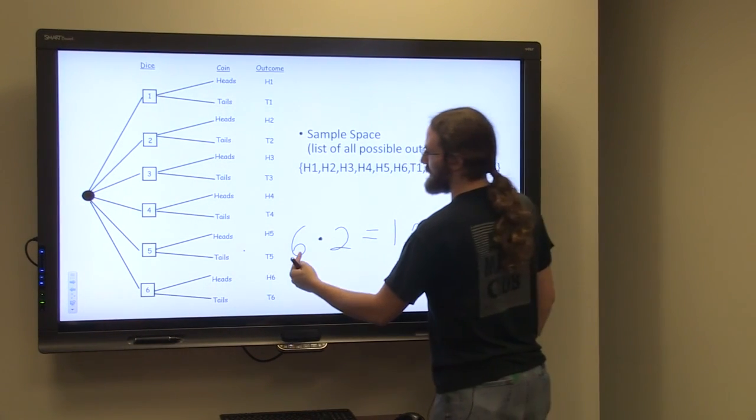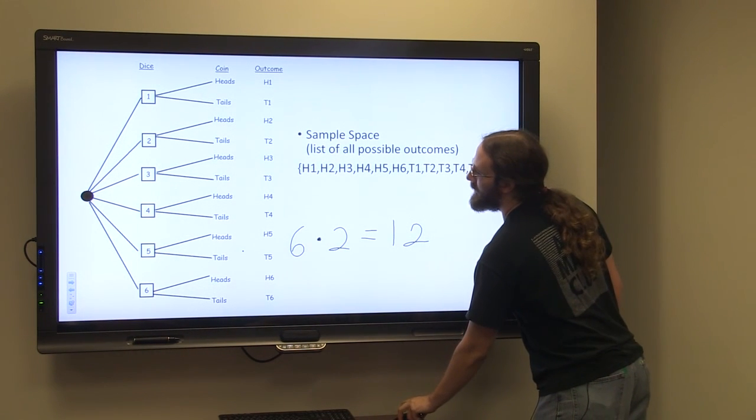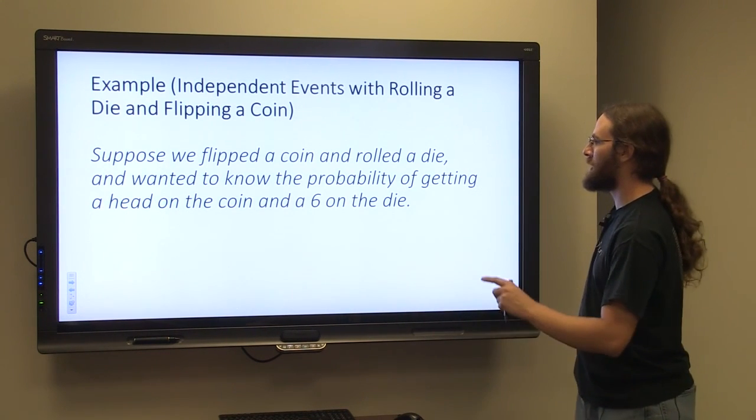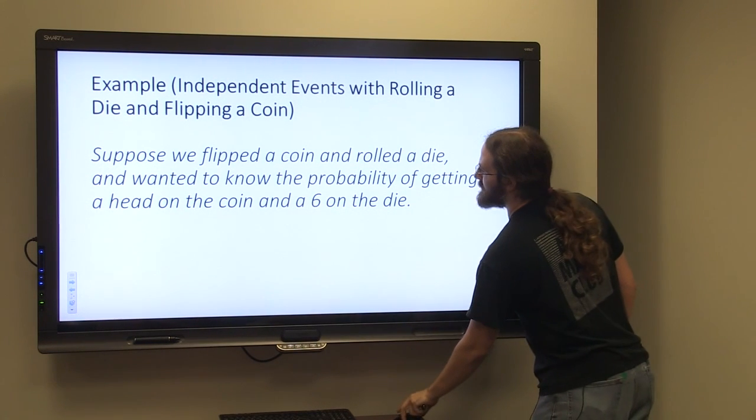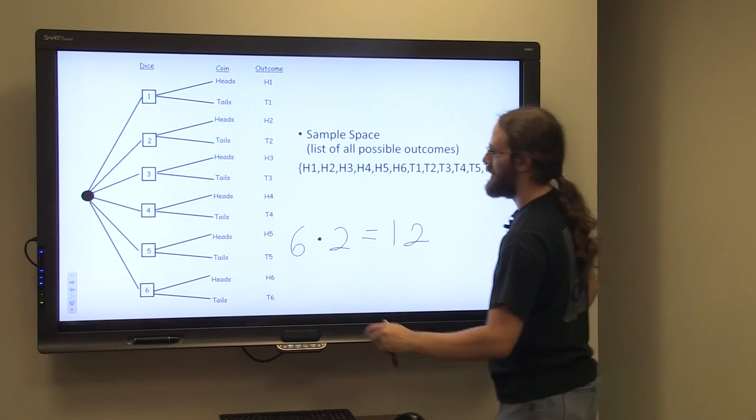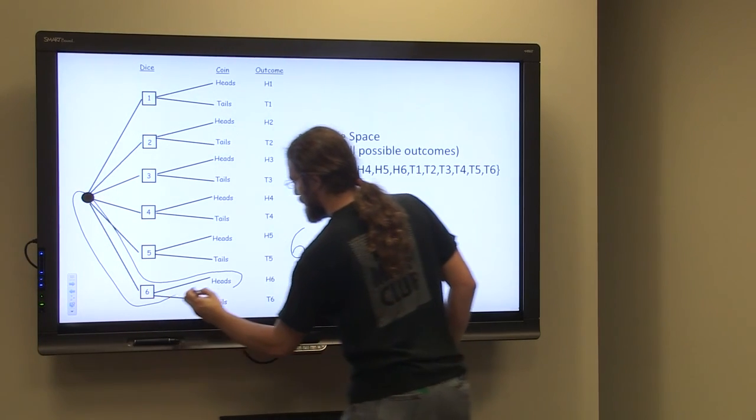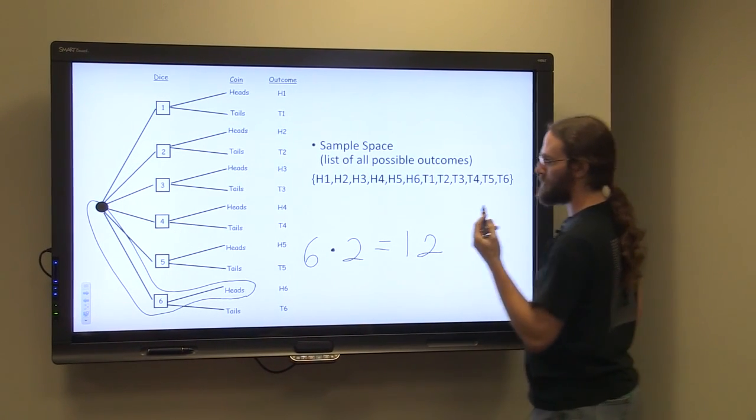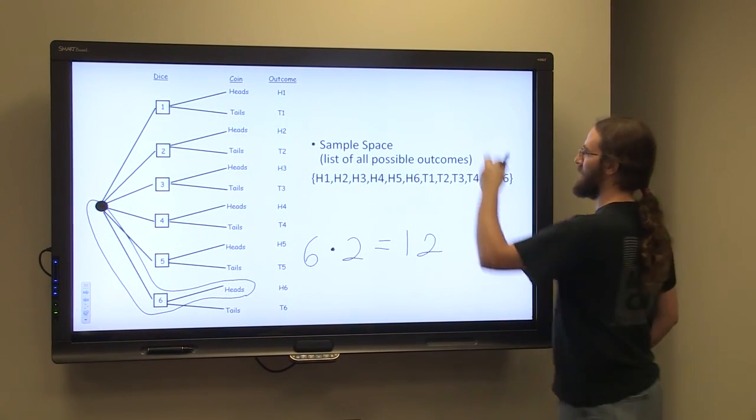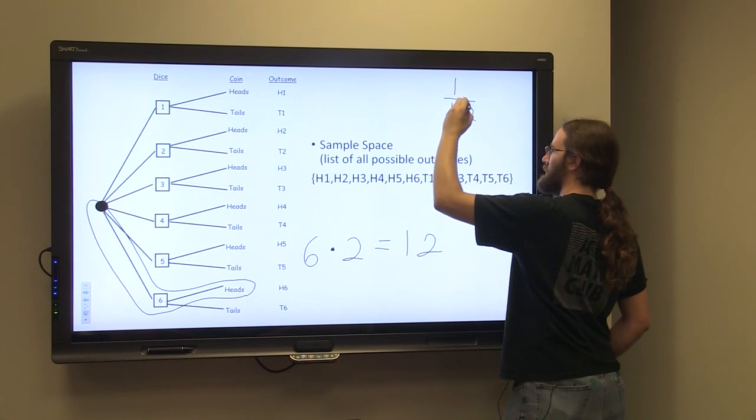We're interested here specifically in flipping a head and rolling a six. So heads and six: this would be one possible outcome out of 12 possible outcomes. So the probability of rolling a six and flipping a head would be one out of 12.